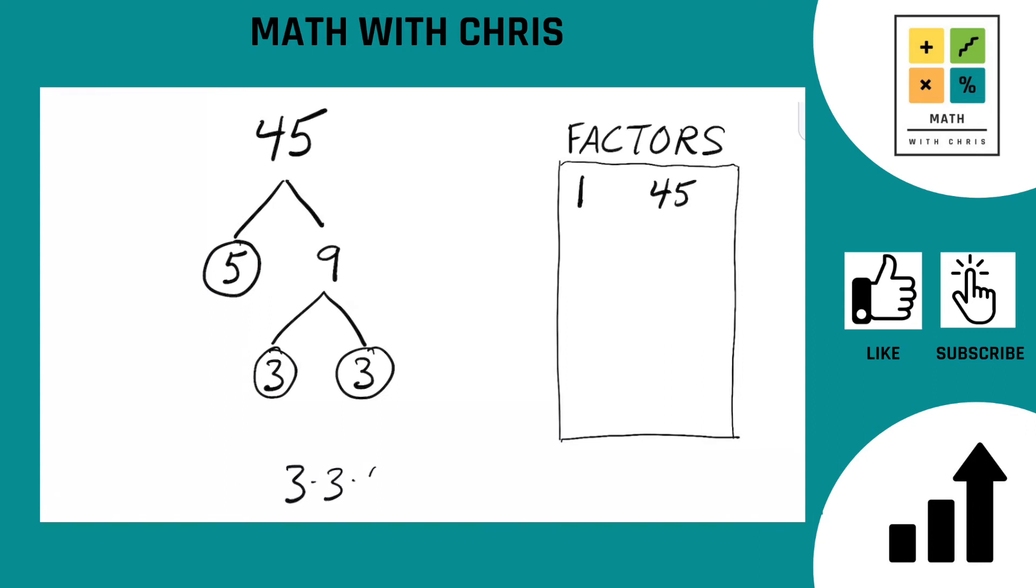Those are our prime factors of 45. 3 times 3 times 5, that equals 45. You can double check it and it does as it should.